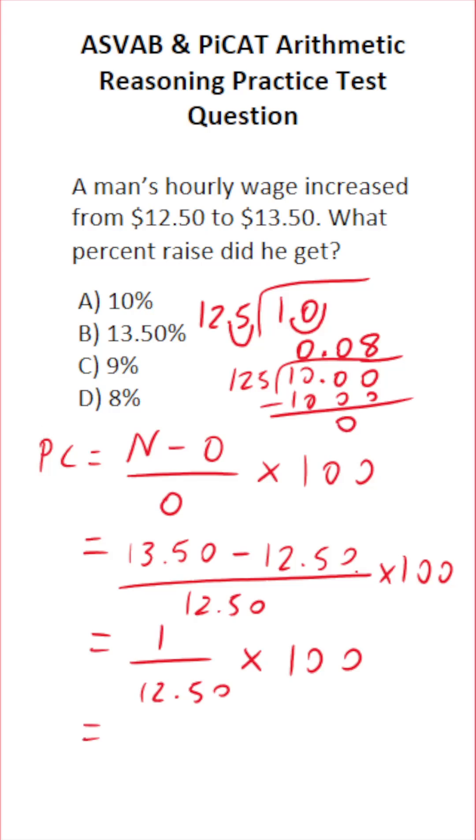This becomes 0.08 times 100. Again, you're just gonna move this decimal one, two times to the right to make this 8%. So he got an 8% raise, D.